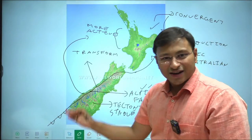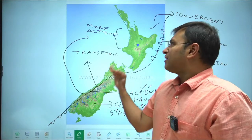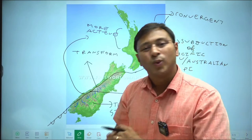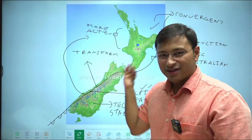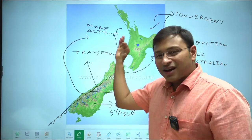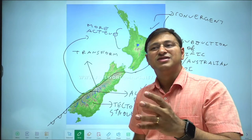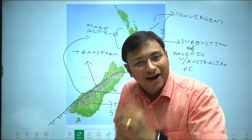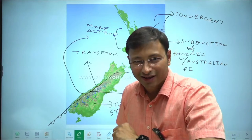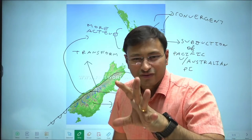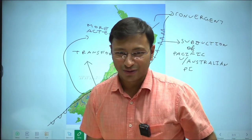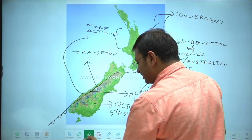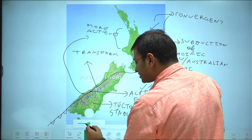Because of the subduction, the North Island will have various volcanic features such as craters, calderas, active volcanoes, dormant volcanoes, and extinct volcanoes. Now that we are clear with the tectonics of New Zealand, let us understand the water bodies around New Zealand — please keep pen and paper ready.